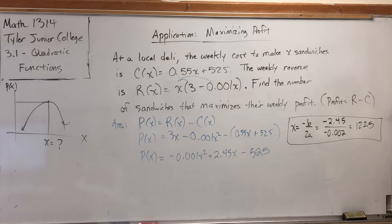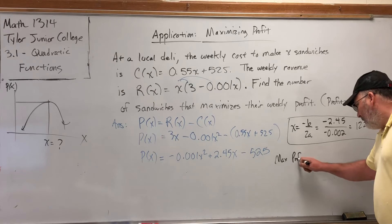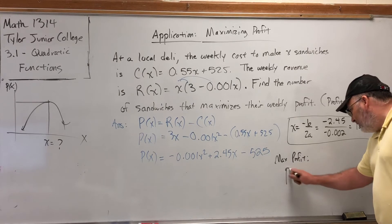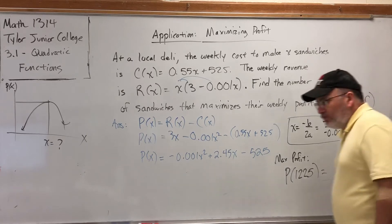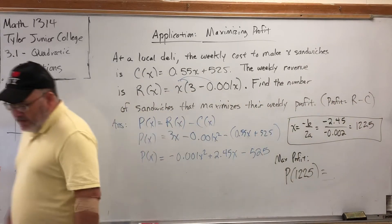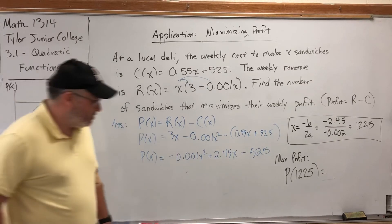But this would be the number of sandwiches that they could sell in a week to maximize their profit. Now, a follow-up question, which I didn't write on the board but I think it's reasonable to ask, is okay, this is how many sandwiches we would need to sell to maximize our profit. What would that maximum profit be? That would be easy to figure out at this point because we have a function that says, give me the number of sandwiches and I'll tell you what the profit is. And if we substitute 1,225 into the function, we would get $975.63.